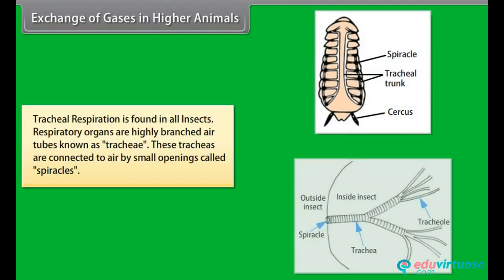Tracheal respiration is found in all insects. Respiratory organs are highly branched air tubes known as trachea. These tracheas are connected to air by small openings called spiracles.